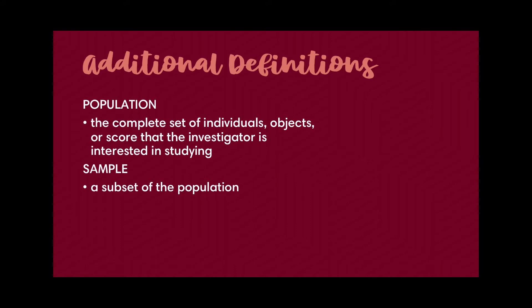I presume this is not new to you. Population is the complete set or aggregate of individuals, objects, or scores that the investigator is interested in studying in a given statistical project or research. Population covers the universe — all possible data points based on specific eligibility criteria. For example, if the target population is all active enrollees in a given university and there are 751 enrollees, then 751 is our population, represented by the big letter N.